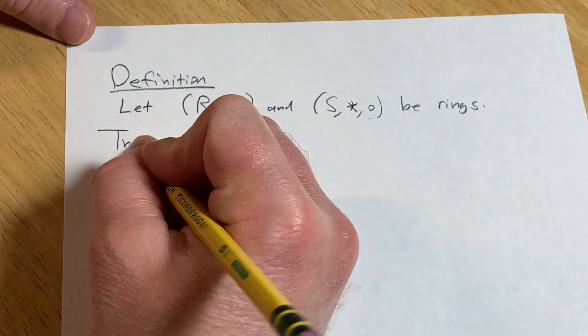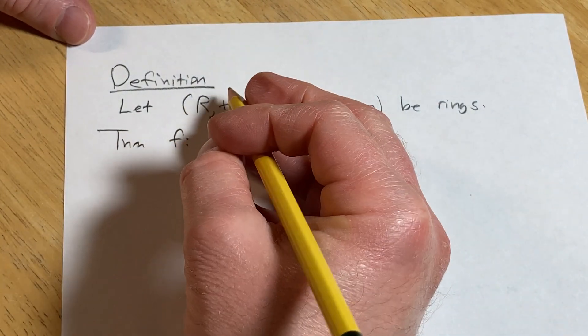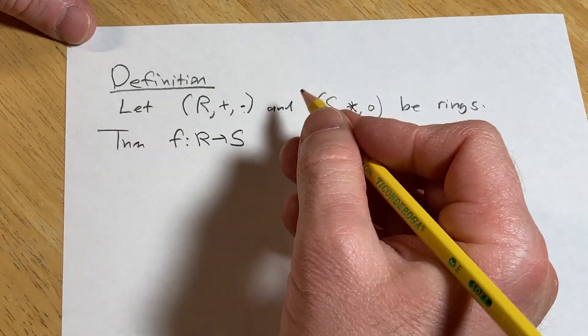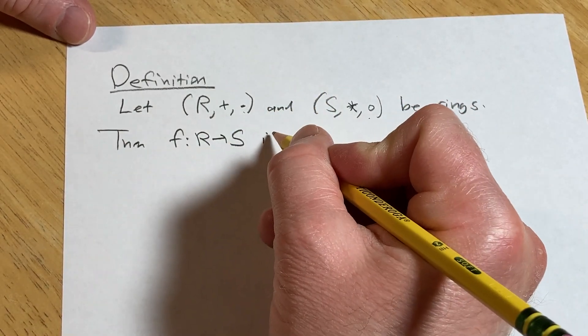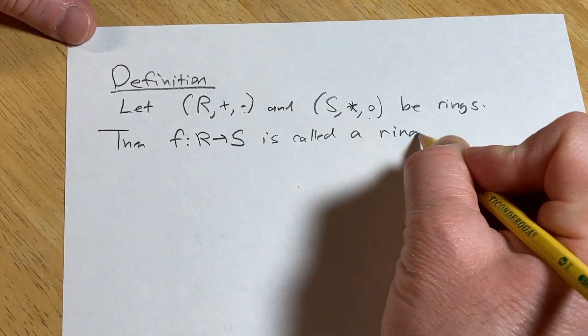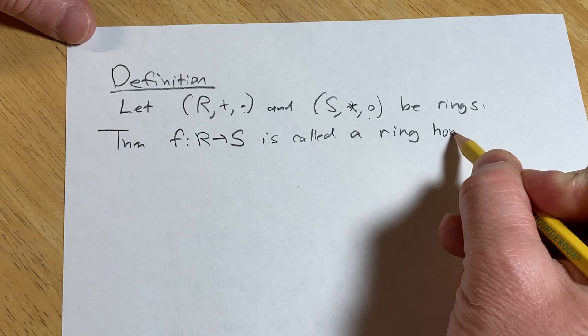Then, F, which is a map from R into S, is called a ring homomorphism.